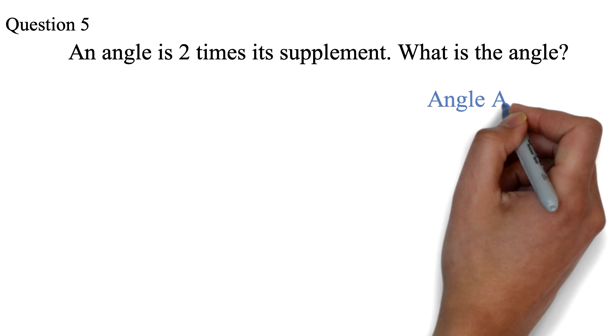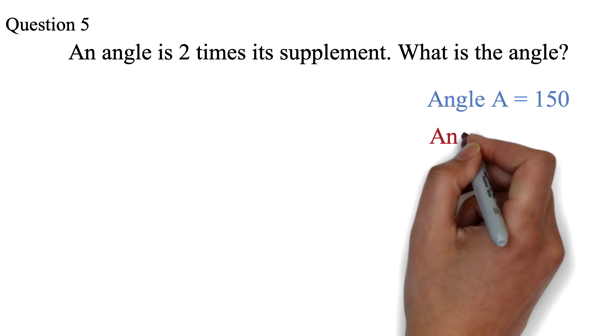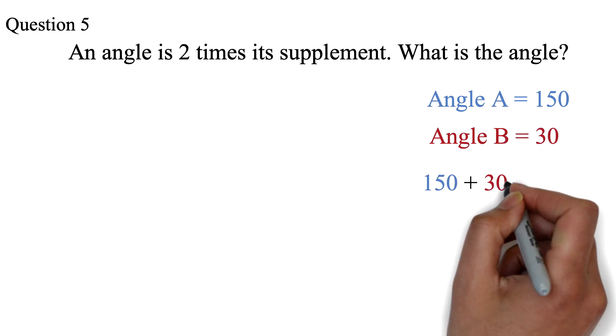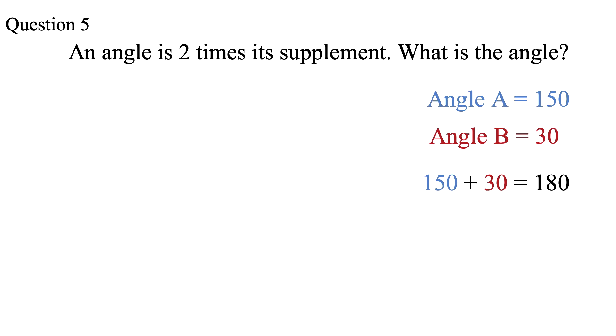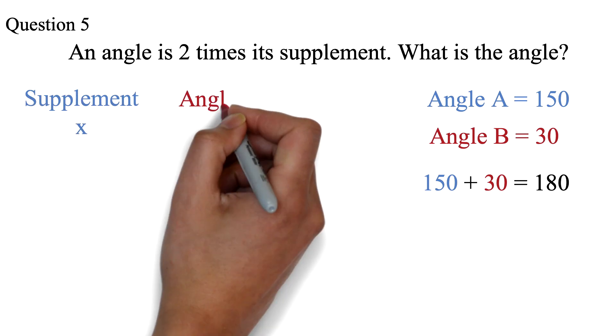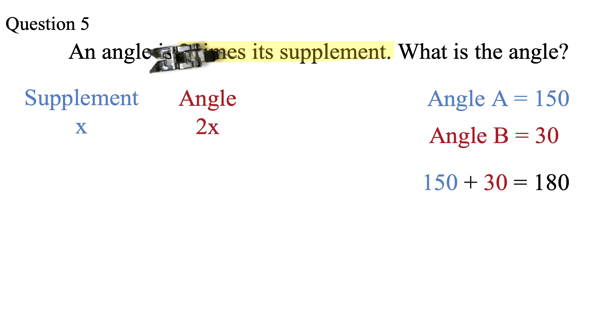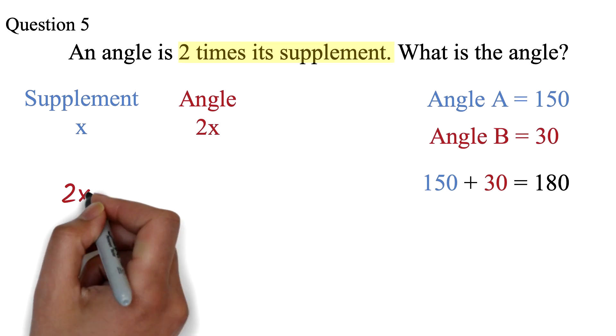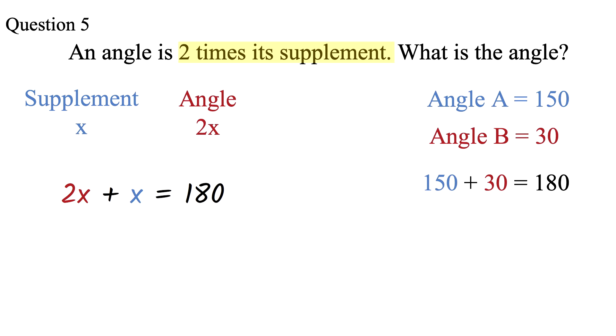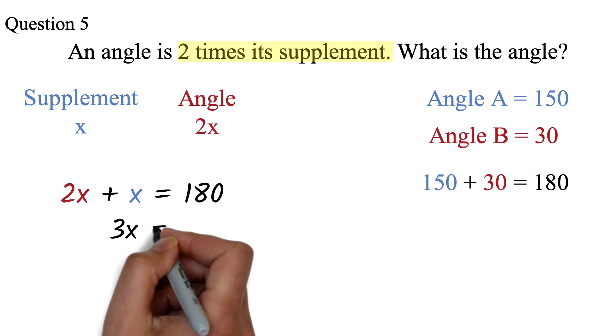So if angle A is, let's say 150 degrees, then angle B must be 30 degrees. 150 plus 30 equals 180. So for this question, if we say the supplement is x, then the angle will be 2x because it is 2 times the supplementary angle. We say that they must add to get 180 degrees. So we have 2x plus x equals 180. We add the x plus 2x to get 3x equals 180.